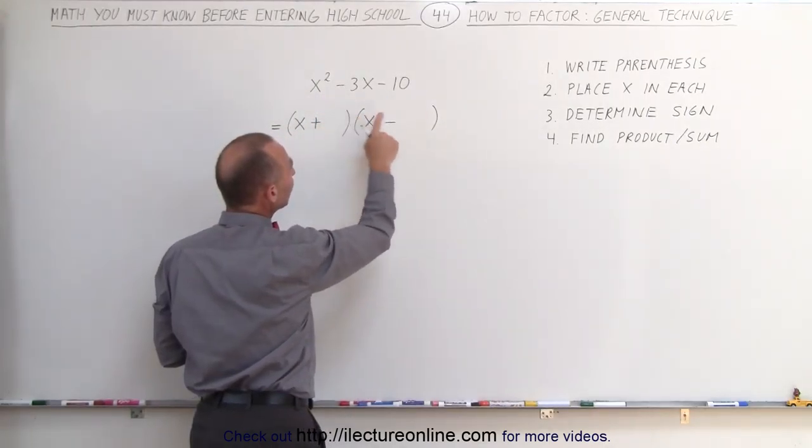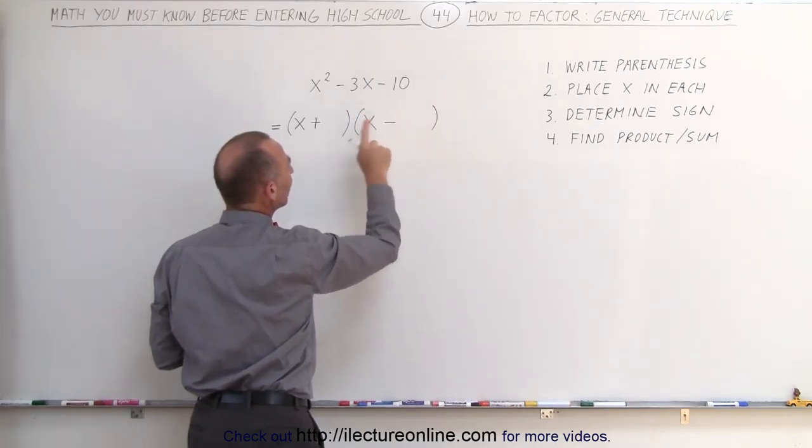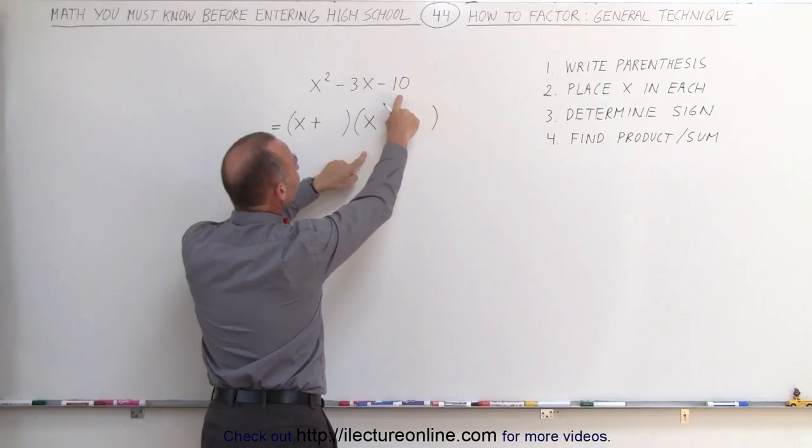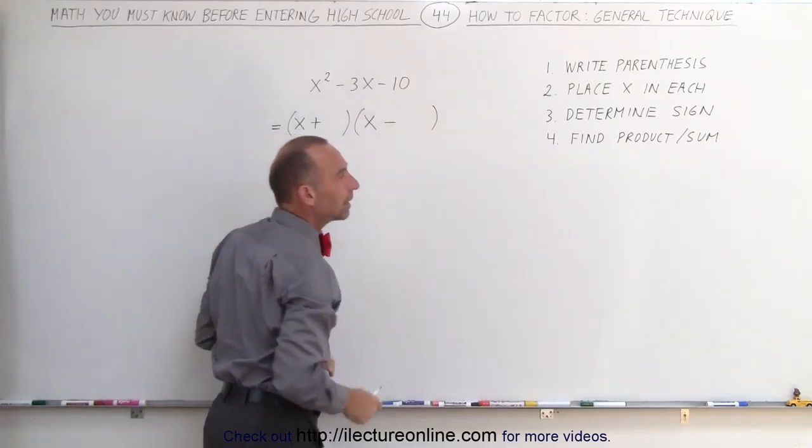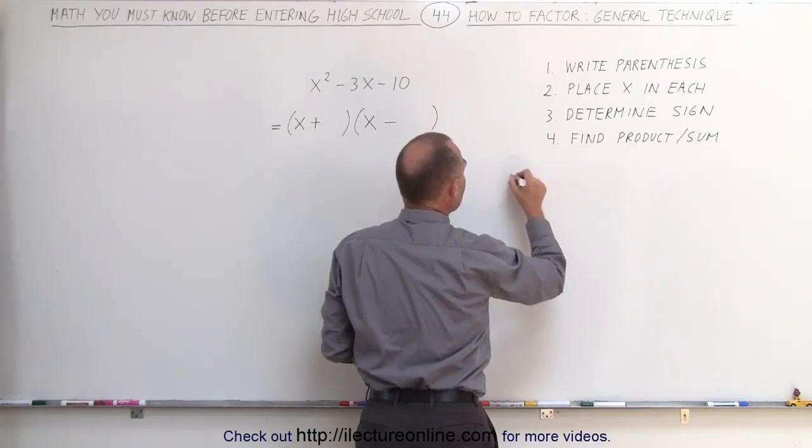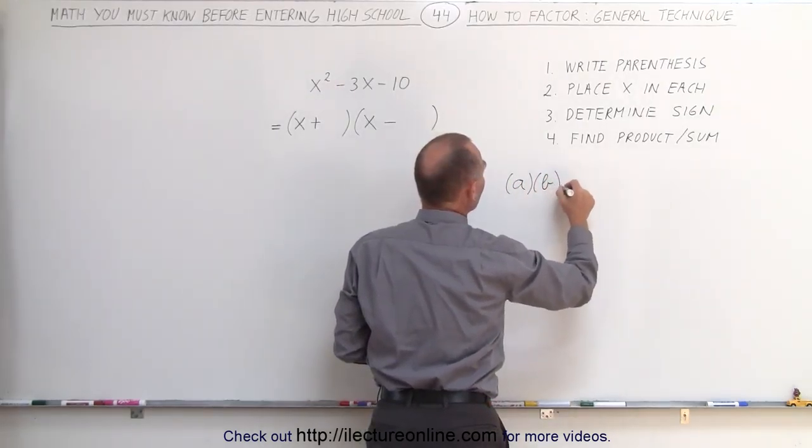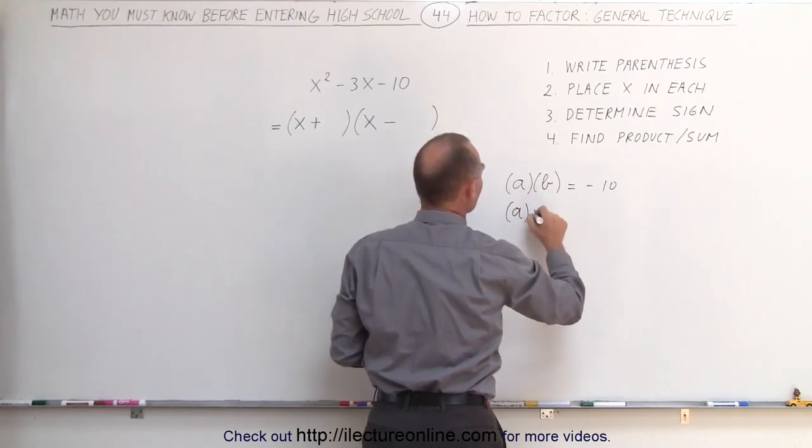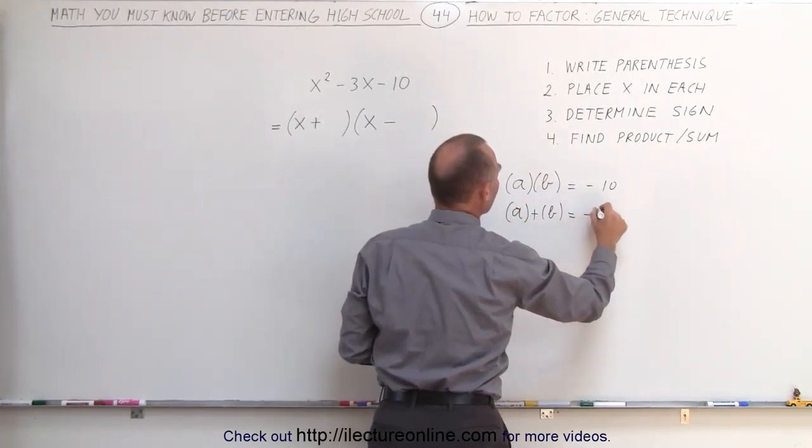Next we need to find the numbers that fit into here in such a way that when you multiply them together, you get a negative 10, and when you add them together, you get a negative 3. Let's say the two numbers are a and b. So a and b, if you multiply them together, you get a minus 10, and if you add them together, you get a negative 3.